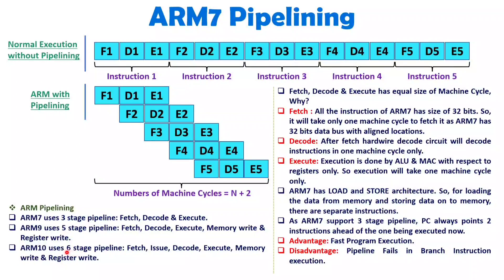With ARM10, it is using a six-stage pipeline, in which after fetch, an issue stage is there. When you have a higher level pipeline compared to three stage, there is a possibility of data conflict. So to remove data conflict issues, first we need to check whether data conflict may be there or not — that checking will require the issue stage. And once it is issued, you can go for that execution of pipeline in parallel. With six stages you can have way far better performance compared to three stage and five stage.